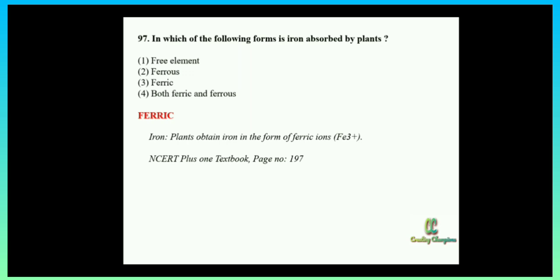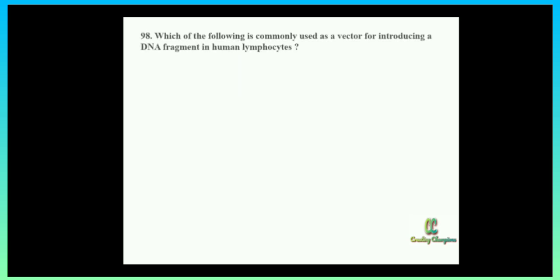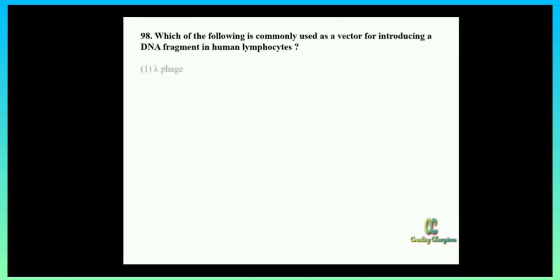Next question: which of the following is commonly used as a vector for introducing a DNA fragment in human lymphocytes? Option one: lambda phage; option two: Ti plasmid; option three: retrovirus; option four: pBR322. This is a sort of indirect question — we need to think about introducing a DNA fragment specifically in human lymphocytes.